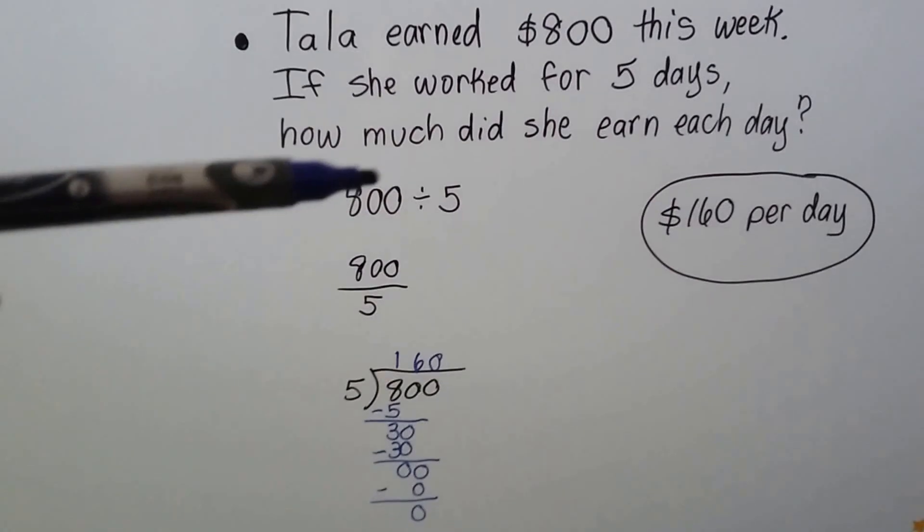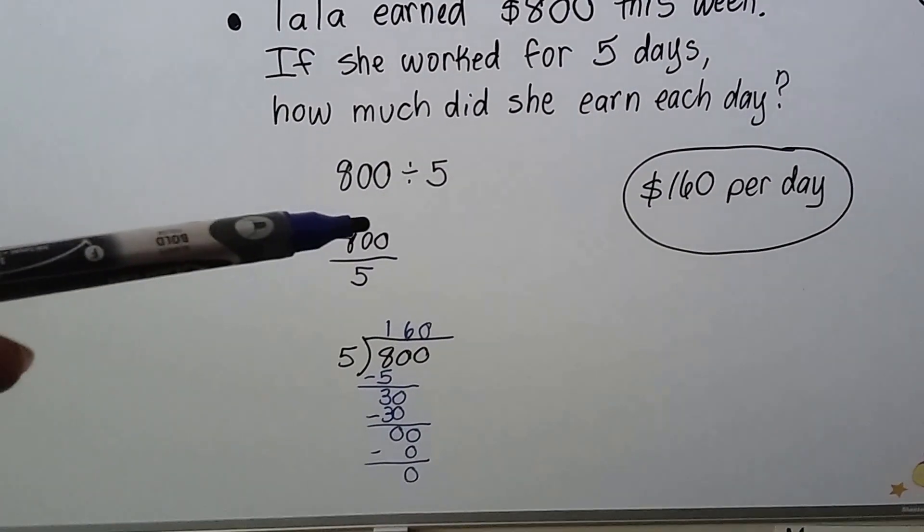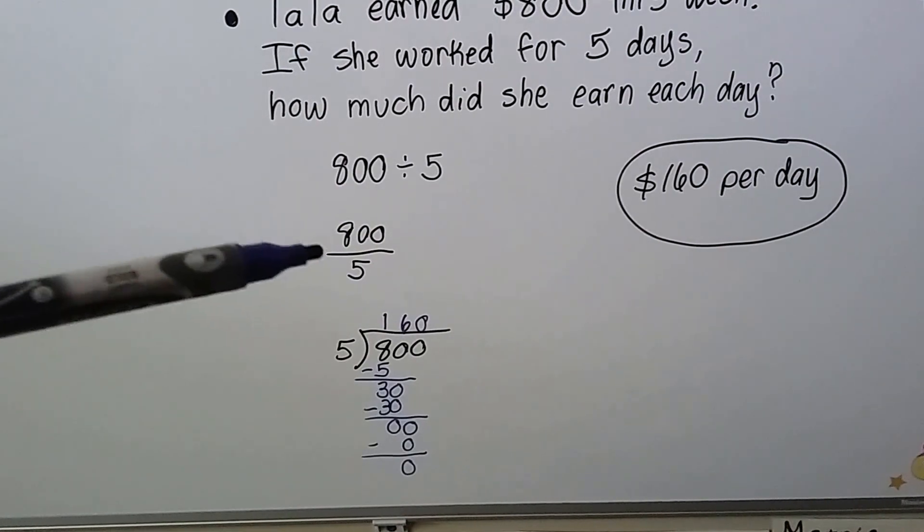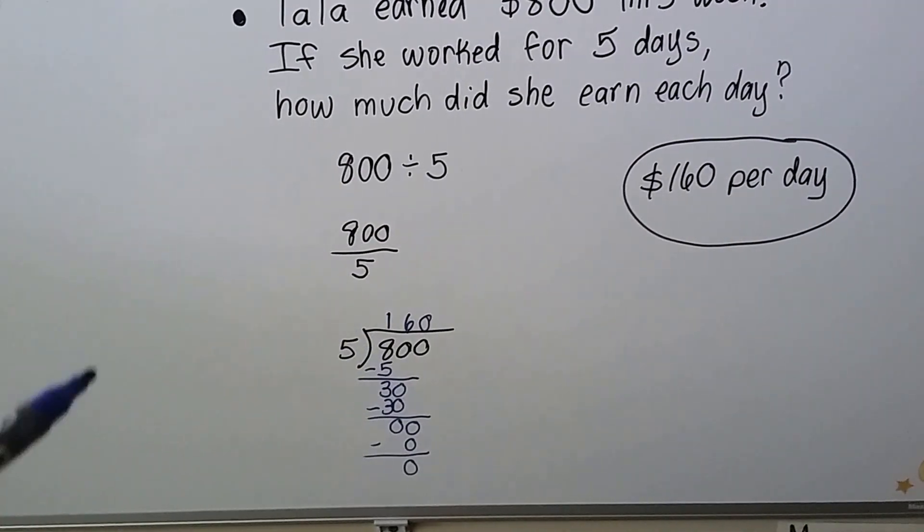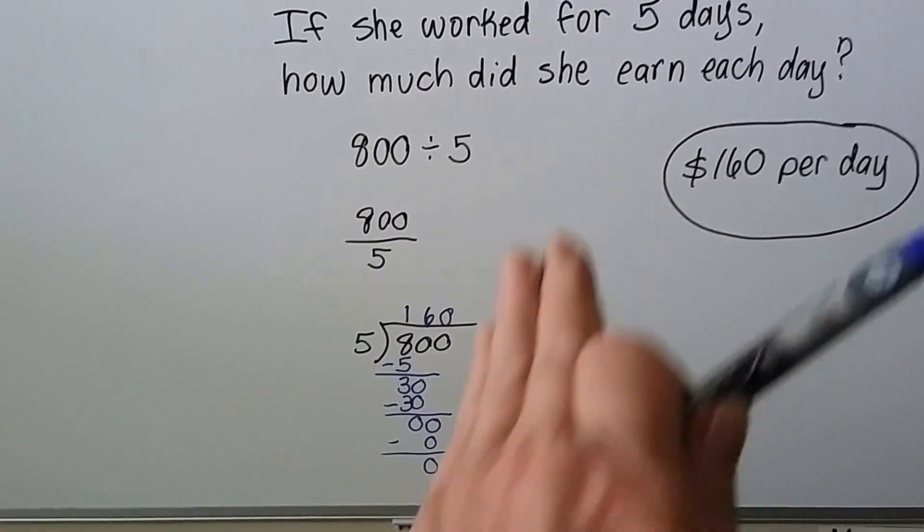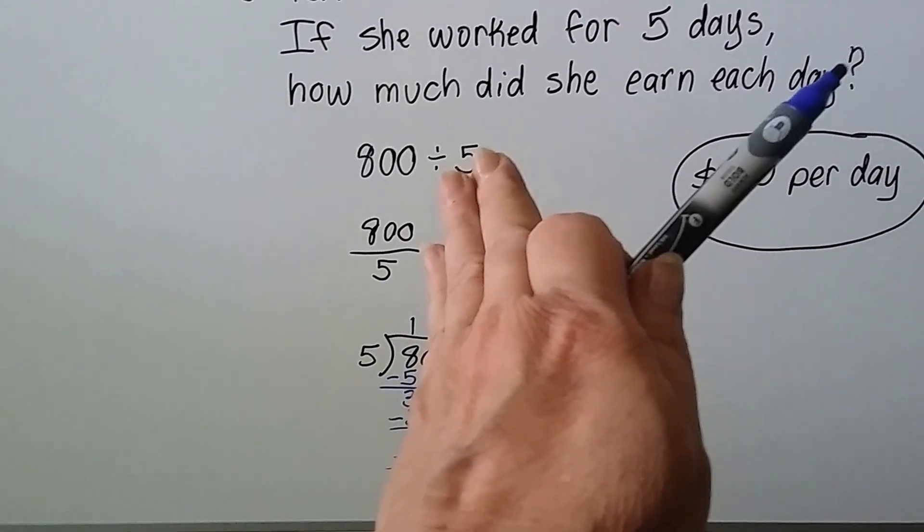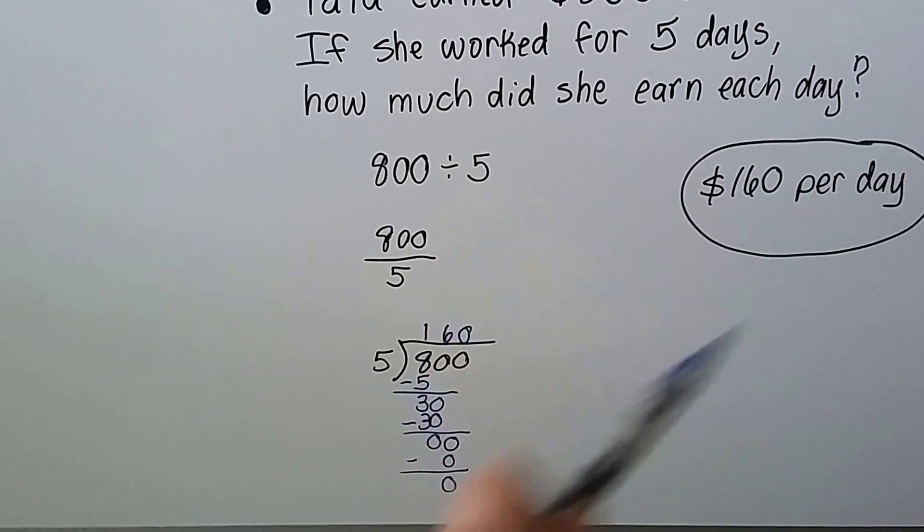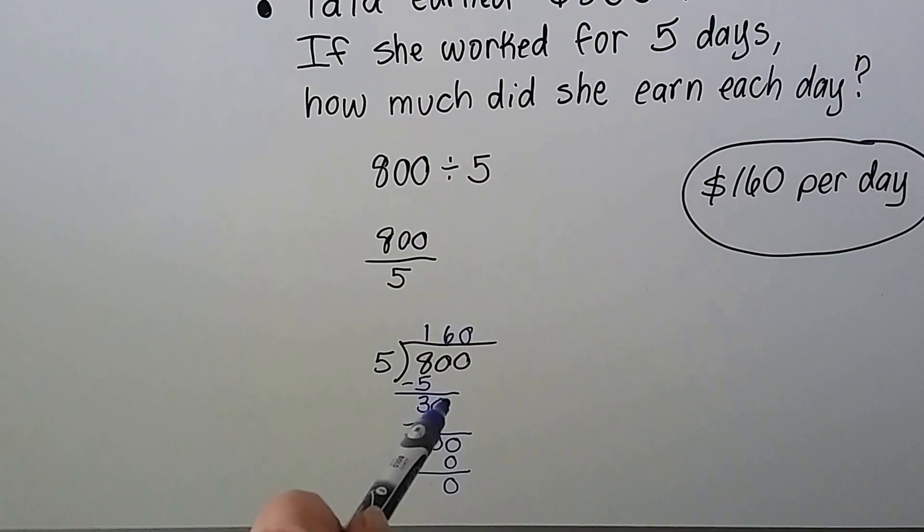So we can write it as 800 divided by 5 or 800 over 5 like this to get a quotient as a fraction. Or we can say 5 goes into 800 how many times? Well, 5 goes into 8 one time and 5 times 1 is 5. And we write that underneath the 8. We do our subtraction and we get our 3. Now it's the 0's turn to come down.